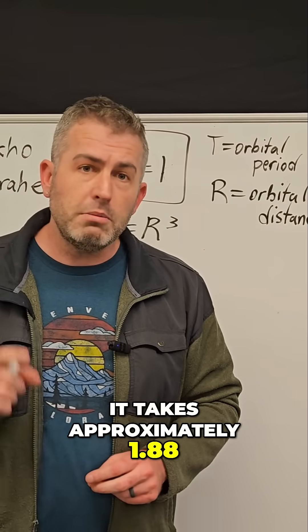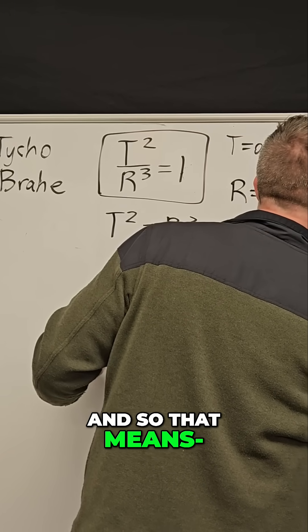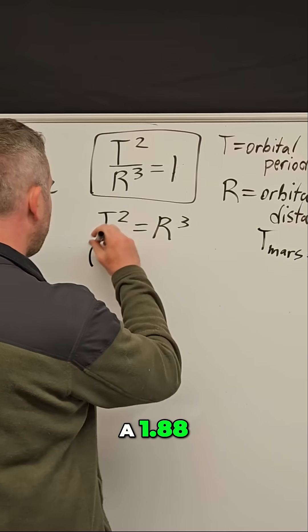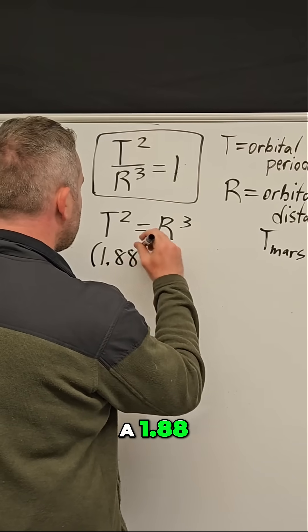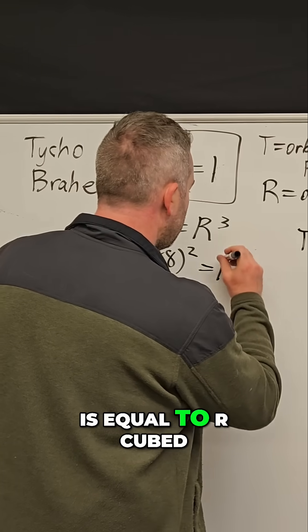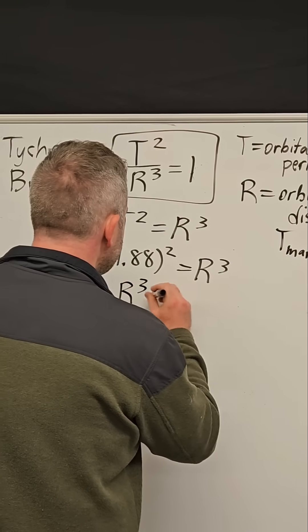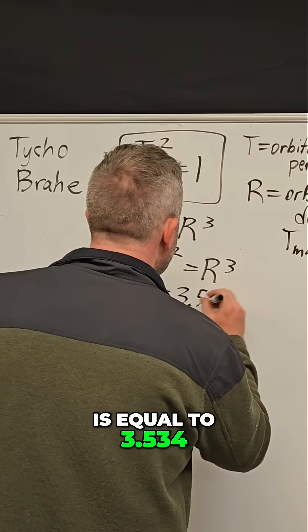It takes approximately 1.88 Earth years. And so that means for our equation, I'm going to plug in 1.88 on this side, and we have to square that as equal to R cubed. So we have R cubed is equal to 3.534.